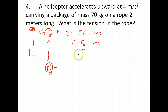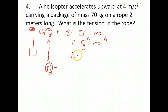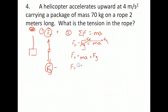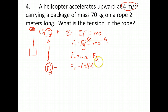Let's solve for tension. We move the force of gravity to the other side, giving us: tension equals mass times acceleration plus the force of gravity. Now we substitute in the numbers. The mass is 70 kilograms and the acceleration is 4 meters per second squared. The force of gravity on the object is 70 times 9.8.